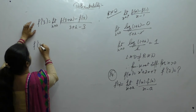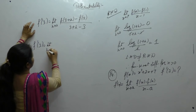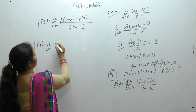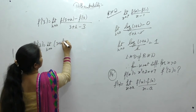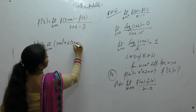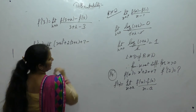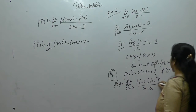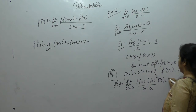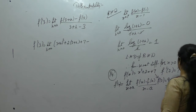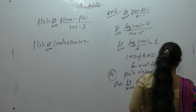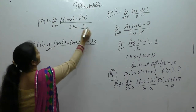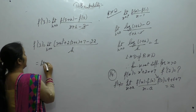Now f'(3) = limit h tends to 0 of [f(3 + h) − f(3)] / h. Substituting: (3 + h)² + 2(3 + h) + 7 minus f(3). For f(3): 3² + 2×3 + 7 = 9 + 6 + 7 = 22. So the expression over h is: (3+h)² + 2(3+h) + 7 − 22.